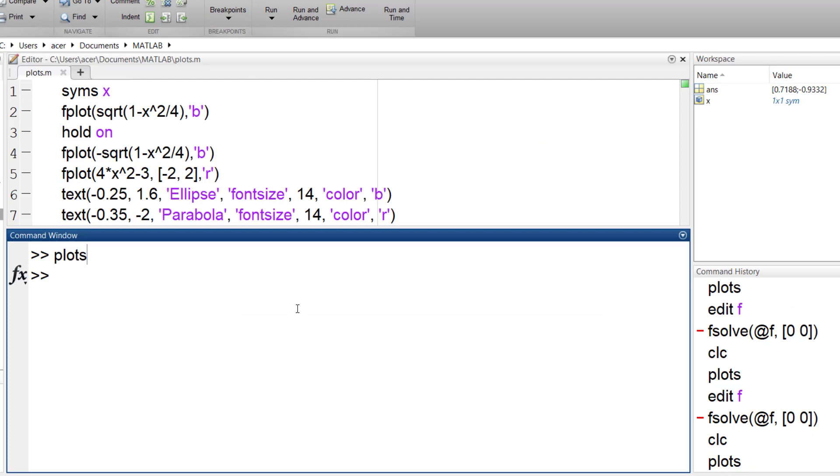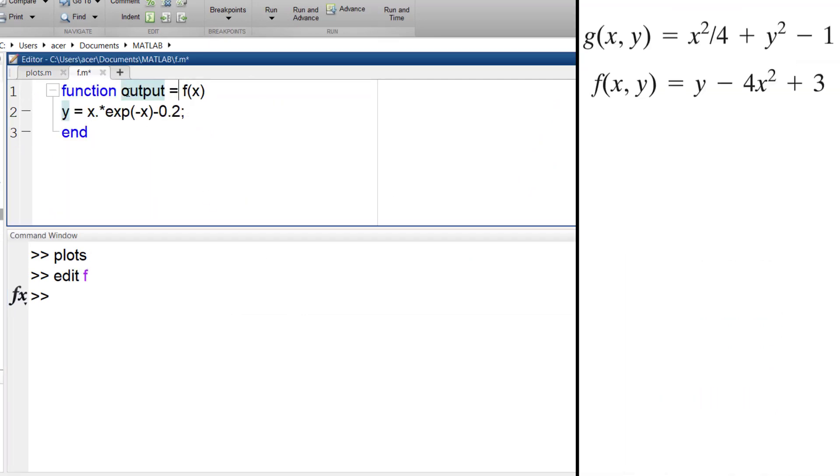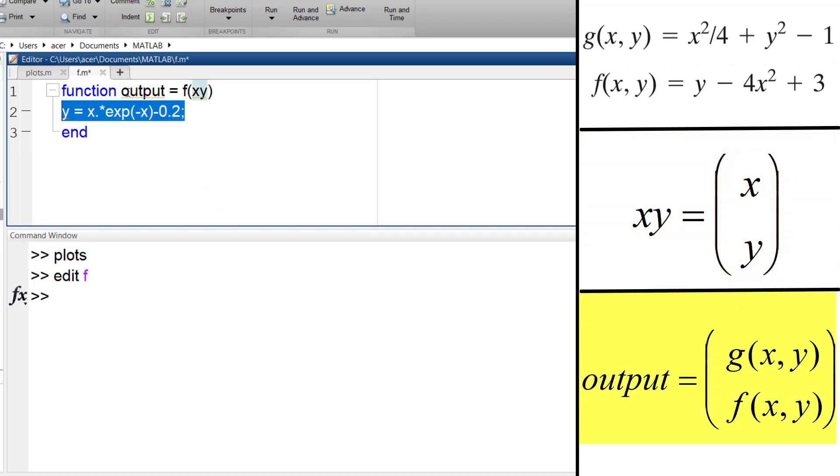I go back to my function definition. Output equals f of xy. This vector is xy and this is the output.